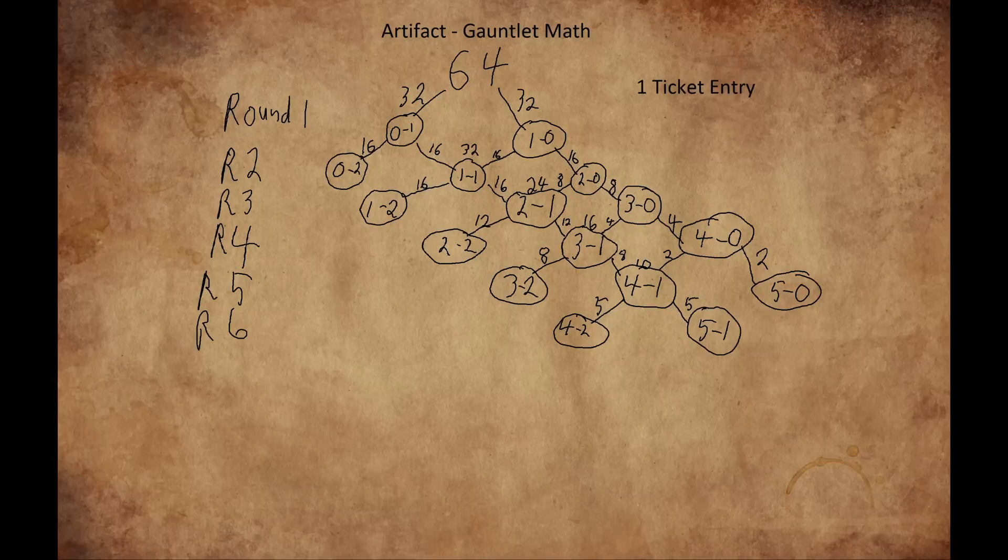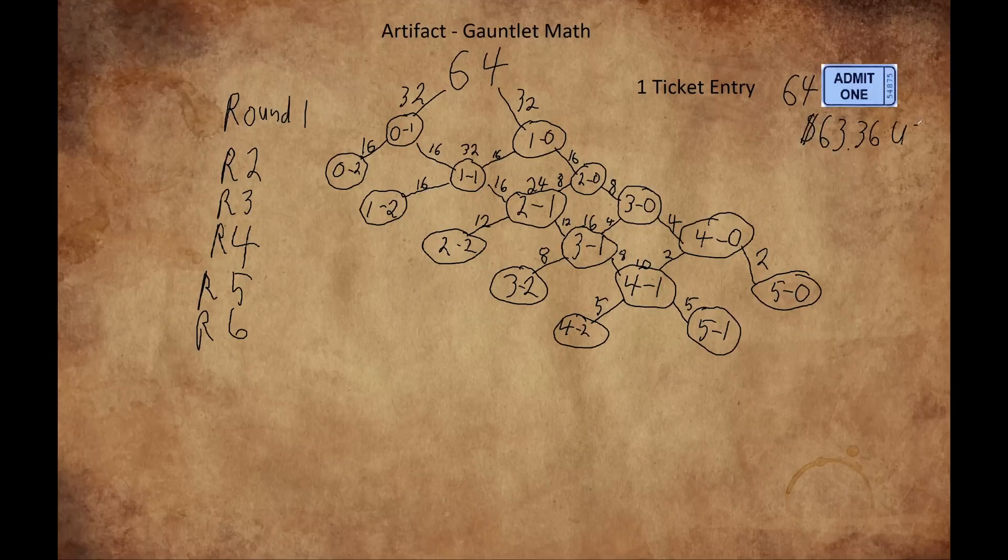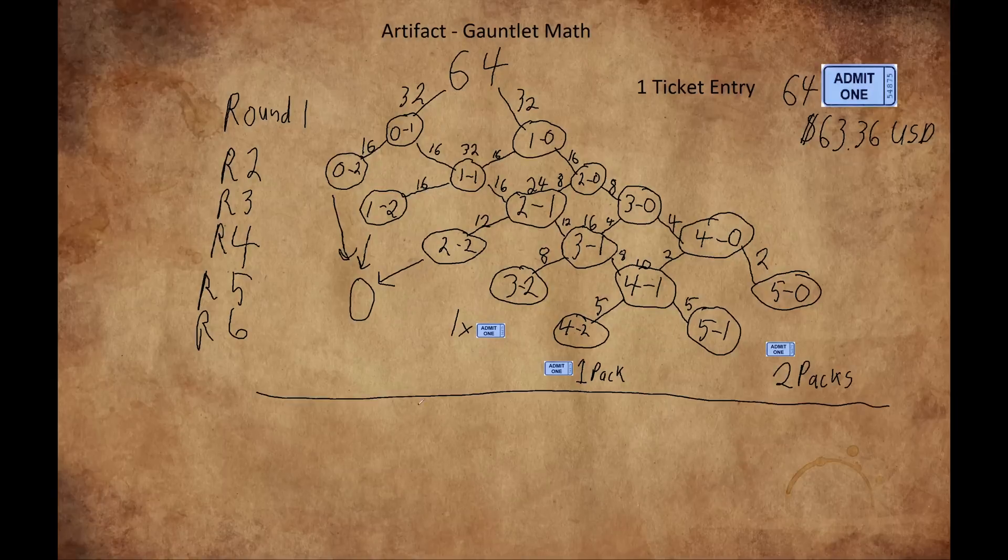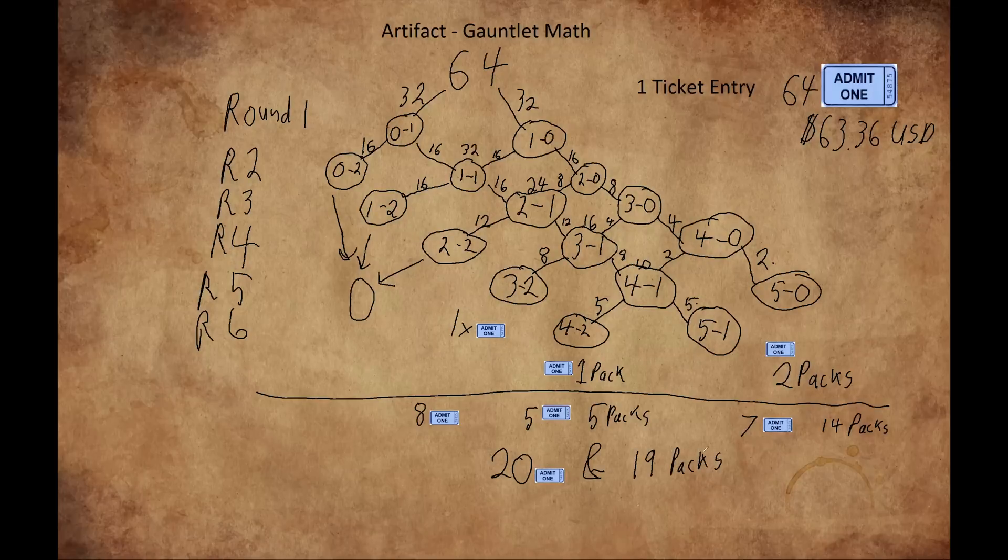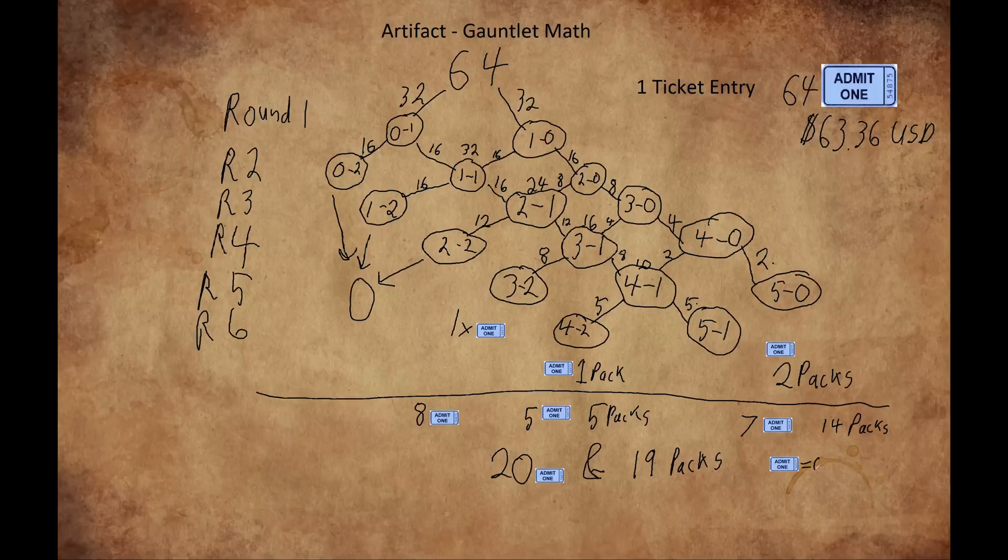Looking at the 1 ticket queue, we see that they pay a total of 64 event tickets to join, or $63.36. Let's add on the prizes for each place, multiply by the winners of each prize, add it up and we get 20 tickets and 19 packs being paid out. That's a total value of $57.80 USD,